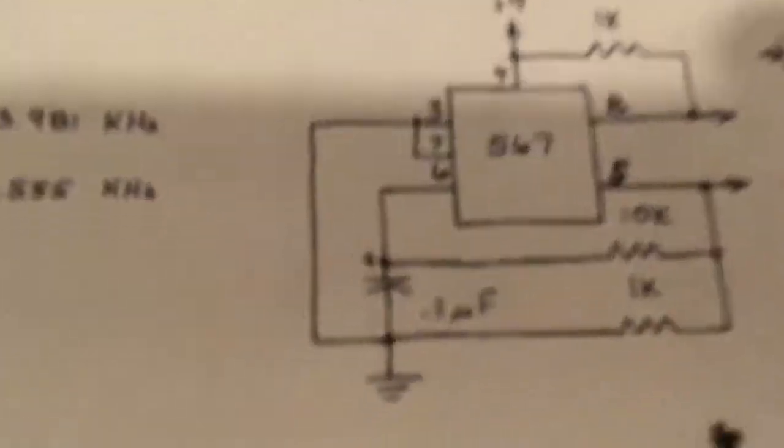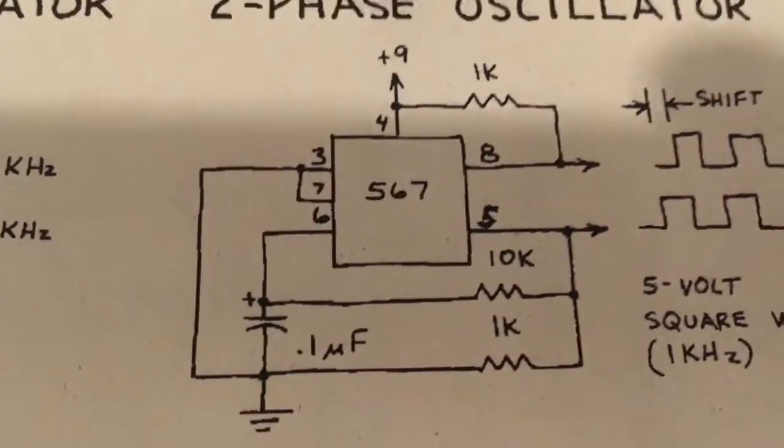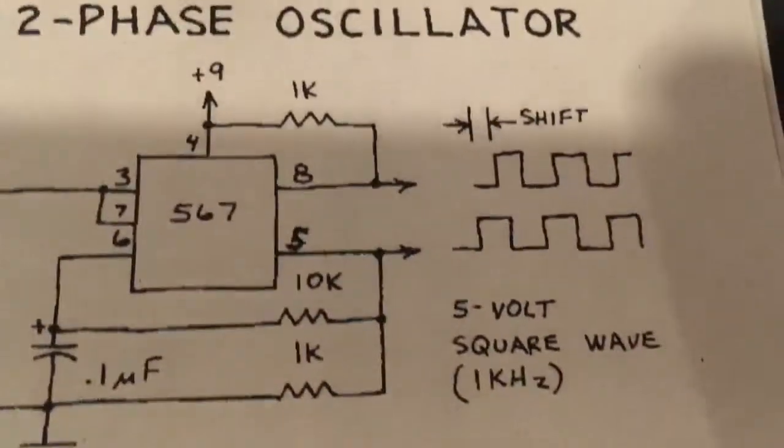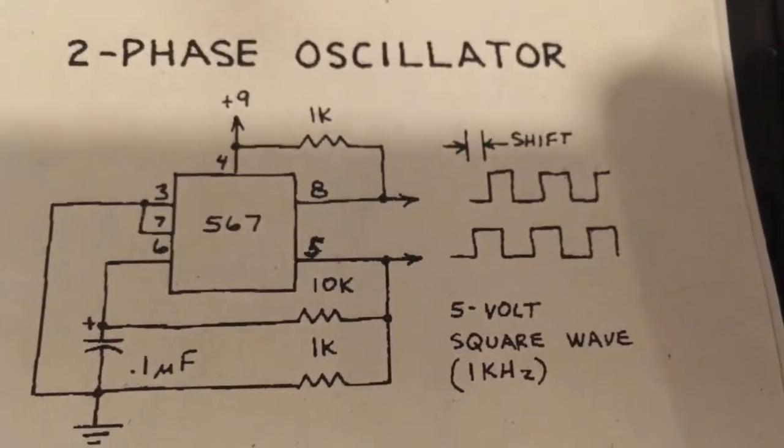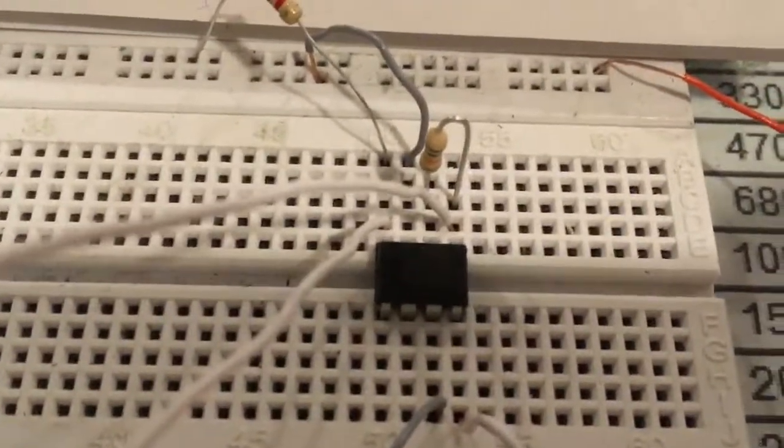If you don't use this cap, your frequency going to maximum for both channels. Channels are separate, 8 and 5 as you can see. 8 and 5 connected separately to the 2 meters.